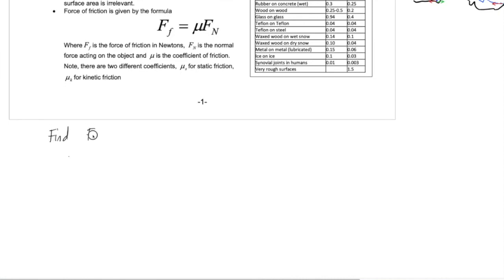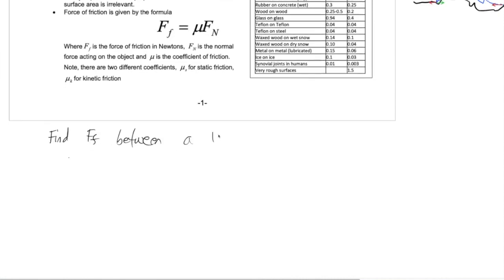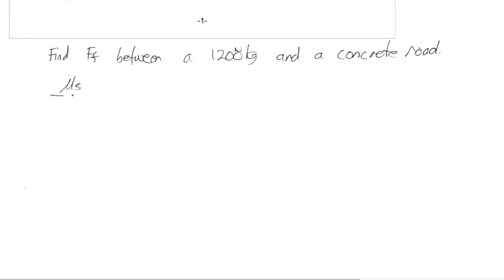Let's find the force of friction between a 1200 kilogram car and a concrete road. So there are two forces of friction that we have to consider. So let's do the mu static first. So drawing the free body diagram. At the moment, there will only be two forces acting on the object, on the vehicle specifically. We have the normal force and the force of gravity.